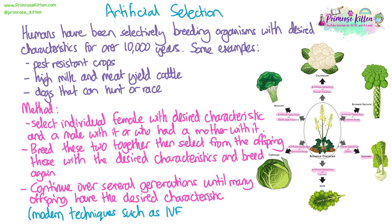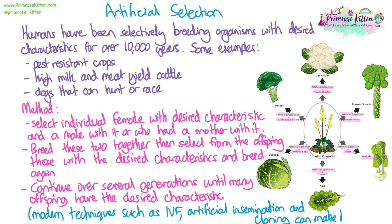This isn't done so much anymore because we now have modern techniques such as IVF and artificial insemination, so actually getting two animals together to breed doesn't necessarily have to happen anymore, and even cloning as well. If we have an organism with a desired characteristic, especially with plants, we can clone that organism rather than breed it to ensure we inherit the characteristic we want. Modern techniques have helped change artificial selection slightly so we don't have to go through that process as much.